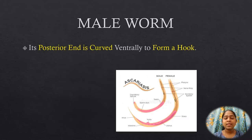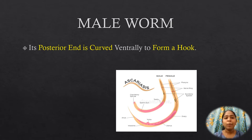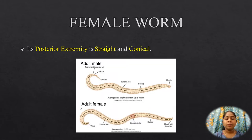The male worm is slightly smaller and shorter than the female. It measures 15 to 30 centimeters in length with a thickness of 2 to 4 millimeters. The posterior end is curved ventrally to form a hook and carries two copulatory spicules.